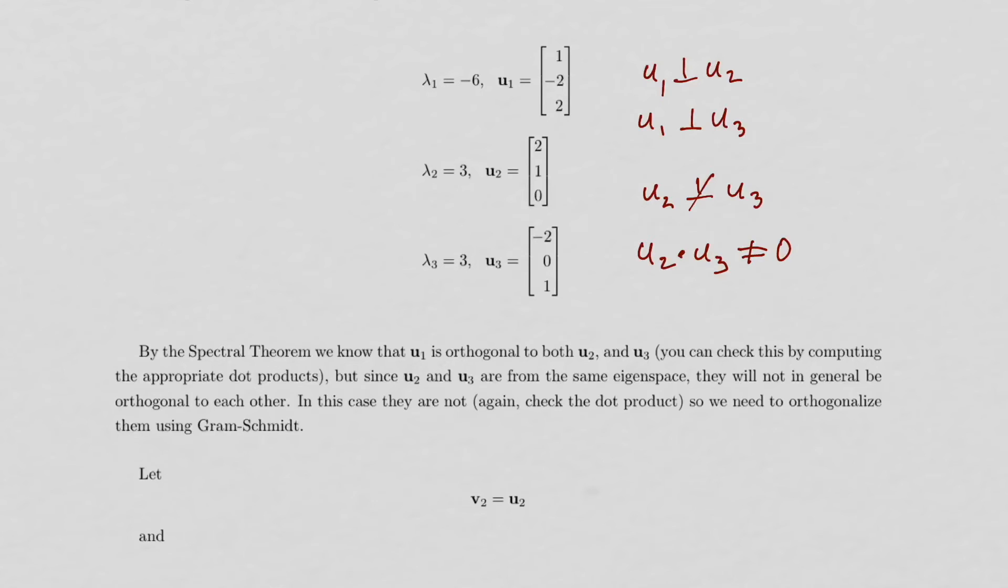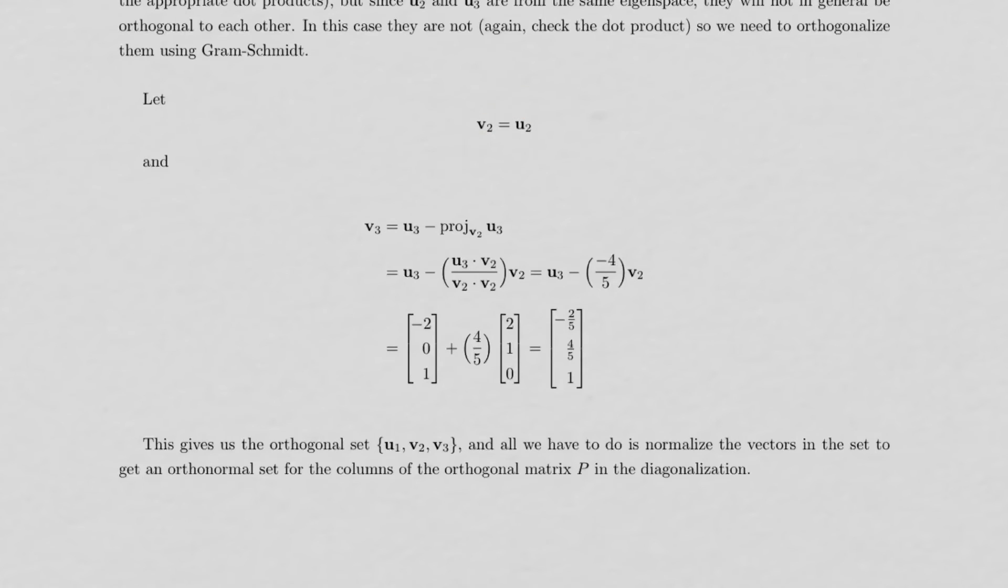So we need to do the Gram-Schmidt process just on these two, U2 and U3. So as usual, I get one vector for free. I'll just say V2 is U2. And then I'm going to subtract the orthogonal projection of U3 onto V2 from U3. And that's going to be my V3.